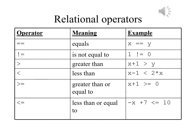Here you can see the six relational operators in Java. If we want to use equals, it's not one but two equals signs. The single equal sign is the assignment operator, copying a value to a variable. The example shows that x == y will be true if both x and y have the same value.